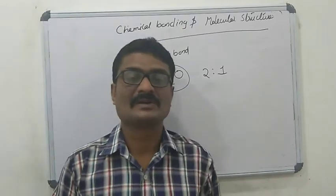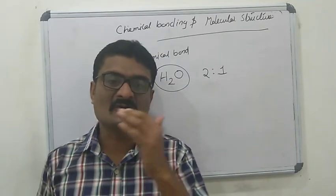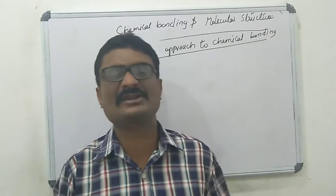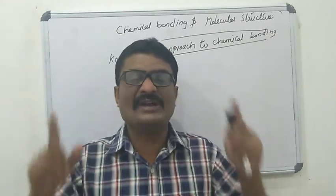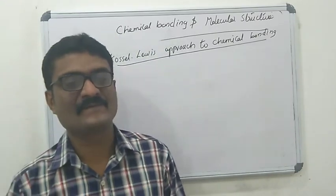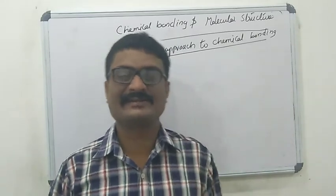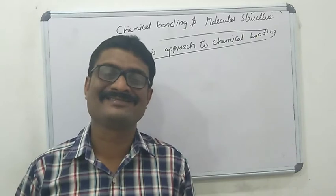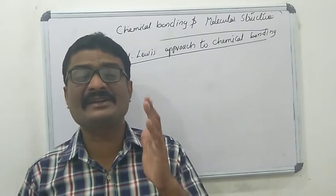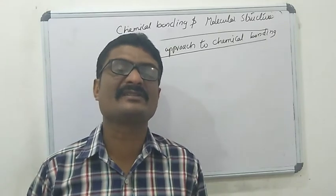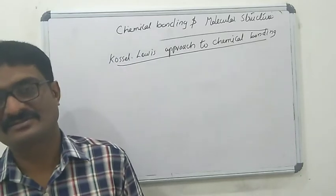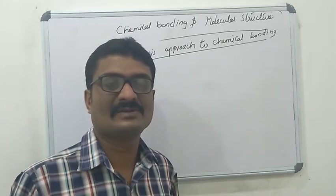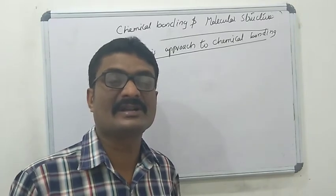Let us start and discuss the Kossel-Lewis approach to chemical bonding. This is a very important theory related to chemical bonding. According to this theory, inert gases — helium, neon, argon, krypton, xenon, and radon — do not enter into chemical reactions with other atoms. The noble gases are chemically inert; they do not enter into chemical reactions.